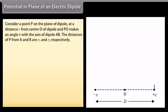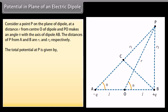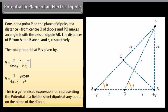Potential in the plane of an electric dipole. Consider a point P on the plane of the dipole at a distance R from center O, where PO makes an angle theta with the axis of dipole AB. The distances of P from A and B are R1 and R2 respectively. The total potential at P is V equals Q over 4π ε₀ multiplied by (R1 minus R2) upon R1 R2, which equals 1 over 4π ε₀ multiplied by P cos theta upon R squared. This is a generalized expression for the potential of the field of a short dipole at any point in the plane of the dipole.